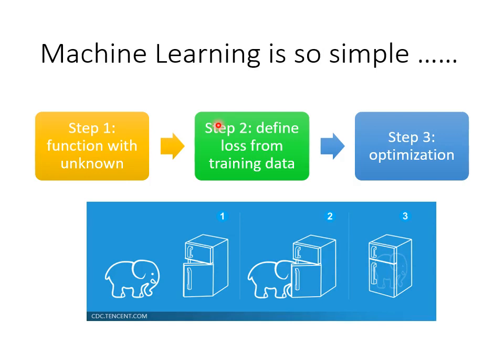This is the most common way to explain RL. I will tell you the relation between RL and the Machine Learning Framework. In the first class, I told you that there are 3 steps in Machine Learning. The first step is that you have a function with unknown variables. The second step is that you define a loss function. The third step is that you find the unknown variables by minimizing your loss, which is also known as optimization.